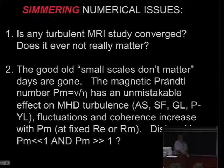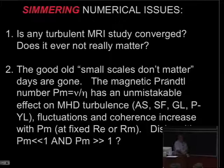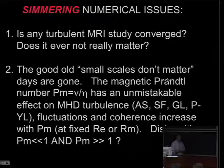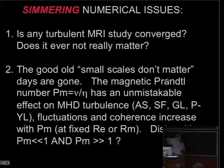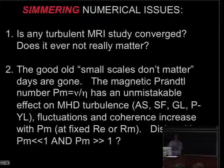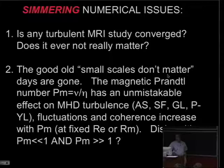The magnetic Prandtl number, the ratio of the viscosity to resistivity, has an unmistakable effect on MHD turbulence, with a sense of it being around Prandtl numbers of unity. It is clear that the level of MHD turbulence increases as the Prandtl number passes from below unity to greater than unity. Several people here will talk about this later in the program: Alex, Sébastien Fromang, Geoffroy Lesur, and Pierre Lesaffre.